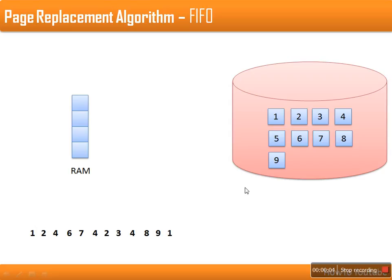In this video I'm going to explain the first-in first-out page replacement algorithm. Why do we need a page replacement algorithm? Our secondary memory is larger than RAM. In this example, the RAM can accommodate only four pages. As the required page is loaded into memory, once the memory is full, if a new page is required, an already-loaded page in memory has to be replaced.